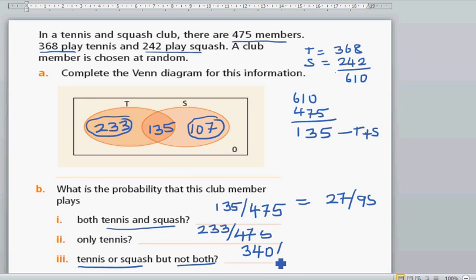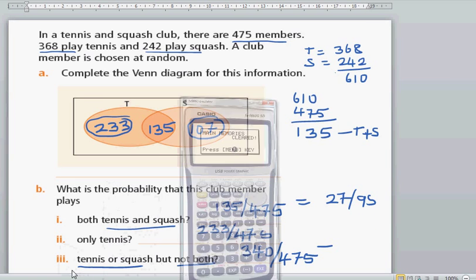340 out of 475. Which is how much? Let me get the calculator out.